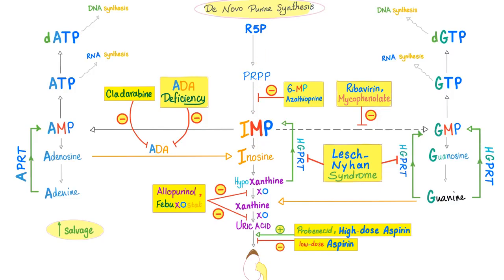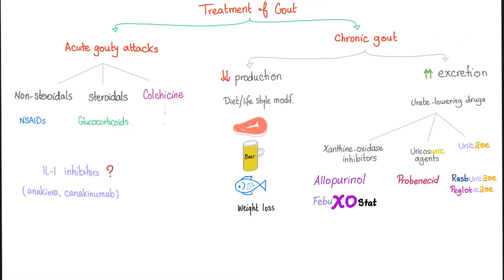Here's the purine synthesis, and this is the purine degradation — hypoxanthine, xanthine, and uric acid. What's the enzyme here? Xanthine oxidase. How do we inhibit it? Allopurinol or febuxostat.